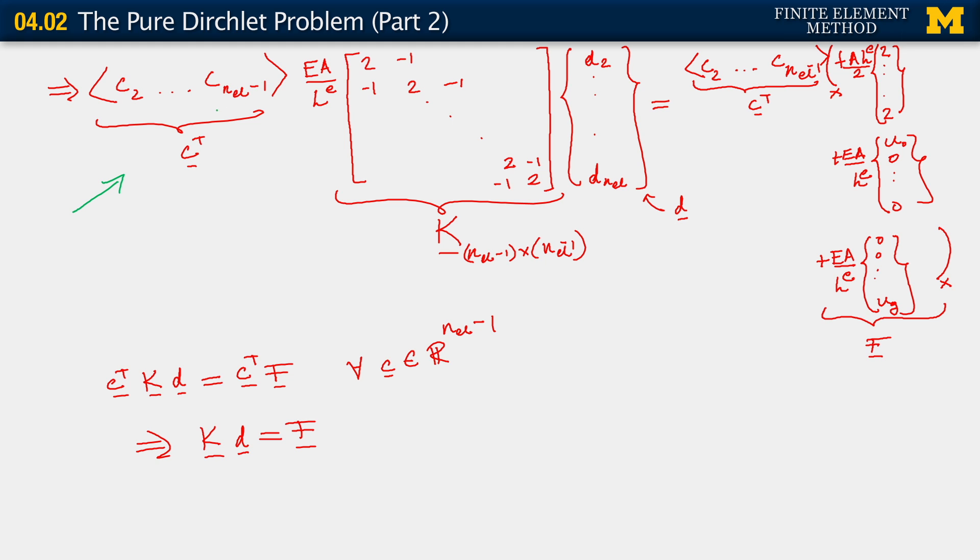Here I denoted the index of this last entry as NEL minus 1. That is incorrect. It should be just NEL, so we excise the minus 1.